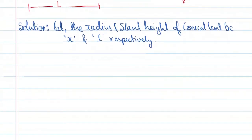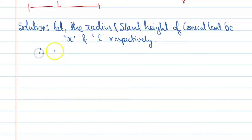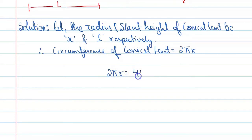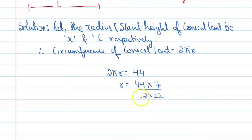We have to find the dimensions. From the circumference of the conical tent, we know circumference equals 2πr. It is given in the question, so 2πr = 44. Solving: r = 44 × 7 divided by 2 × 22, which gives r = 7 meters.